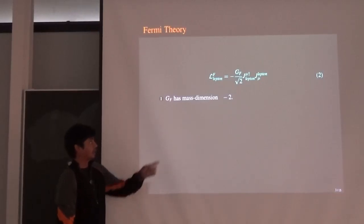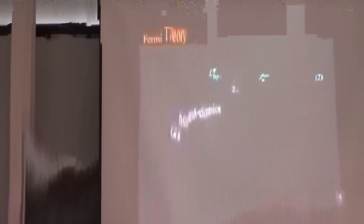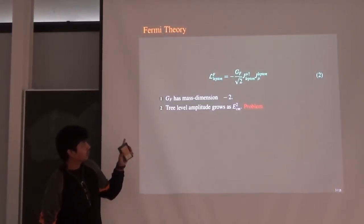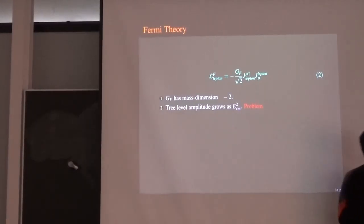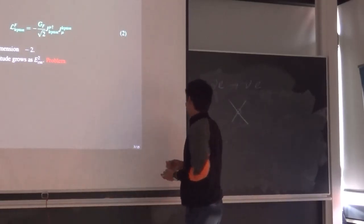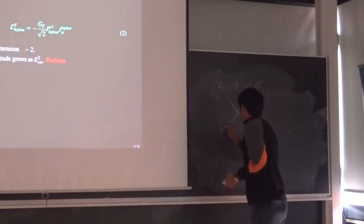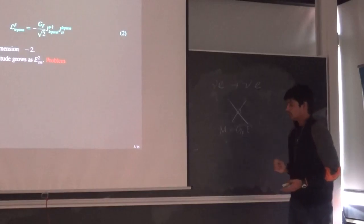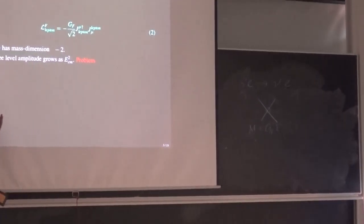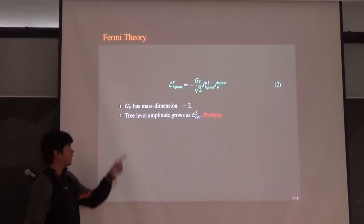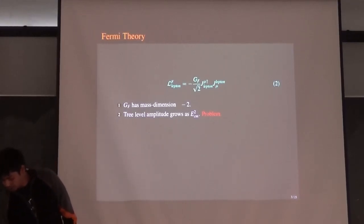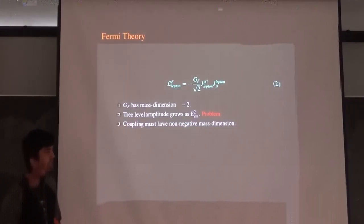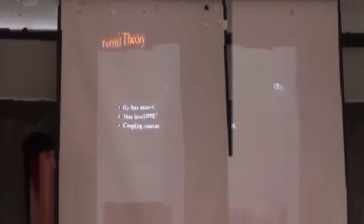Let's start with Fermi theory. Fermi theory is the current-current interaction with lepton-lepton current. Suppose you consider the scattering neutrino-electron going to neutrino-electron. You can write it as a Fermi vertex. When you write the Feynman amplitude, it should be dimensionless. GF is of mass dimension minus two from that theory, and then it should grow with E-squared. So this is problematic — if the Feynman amplitude grows with E-squared, then unitarity will have trouble. This is not a complete theory.